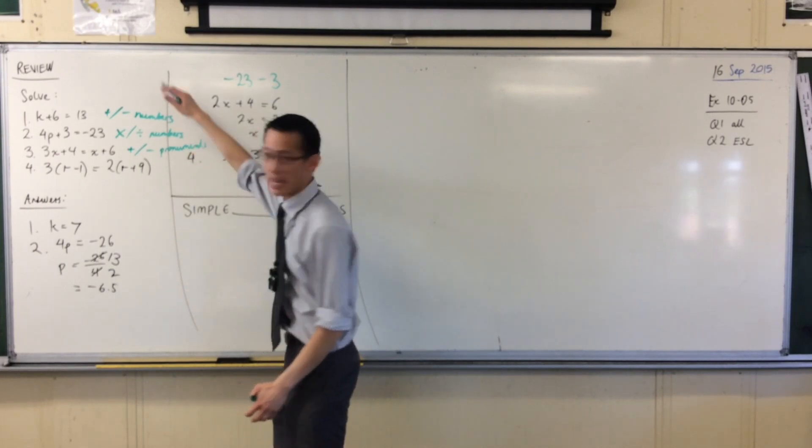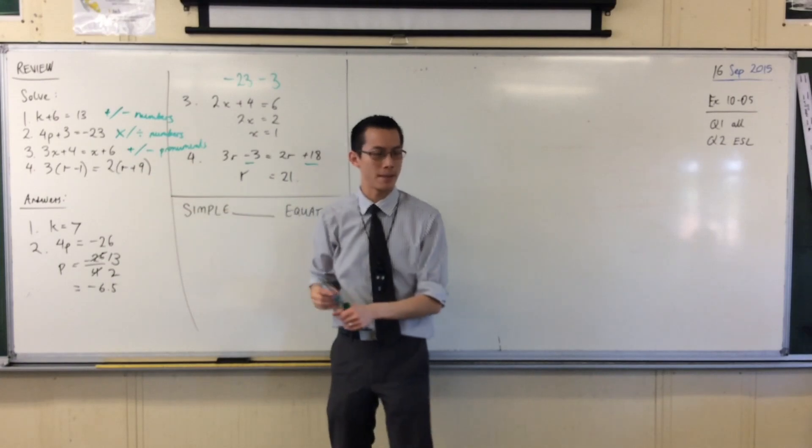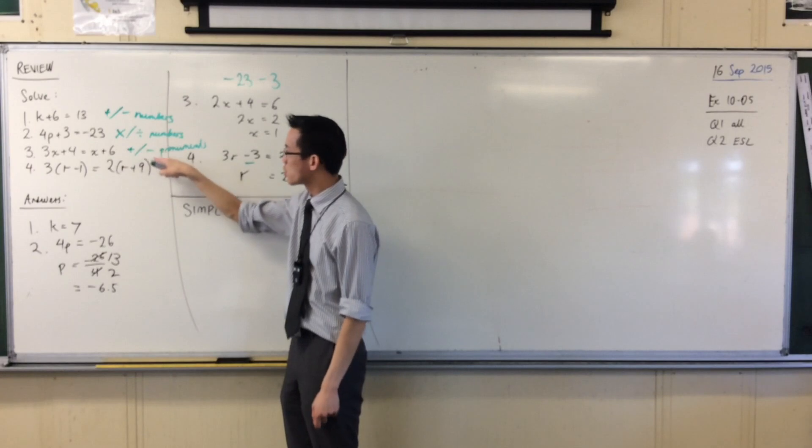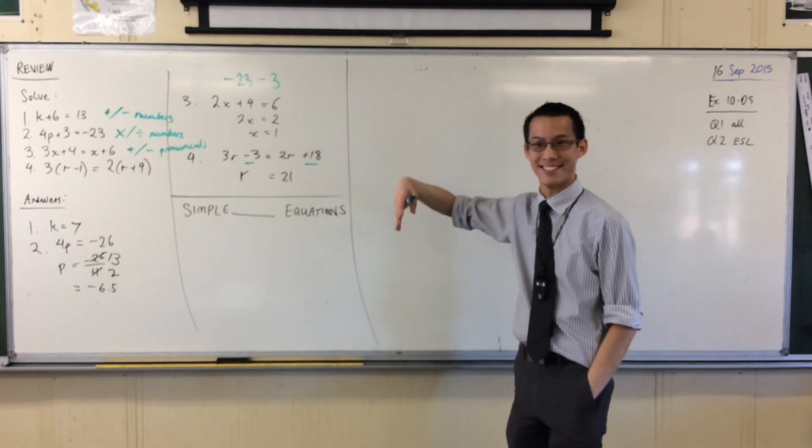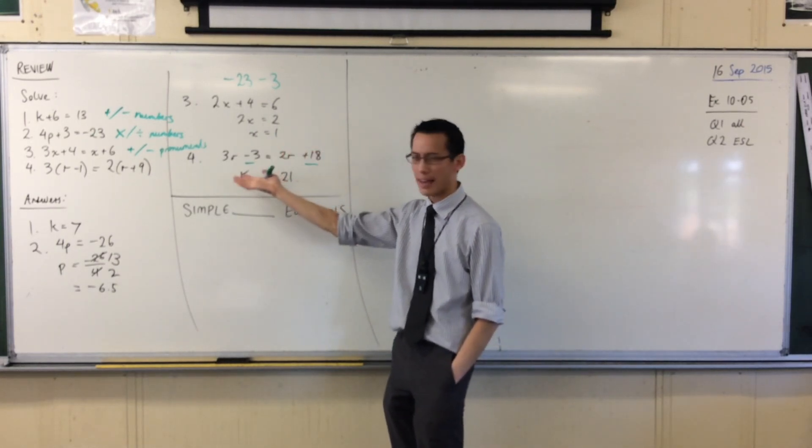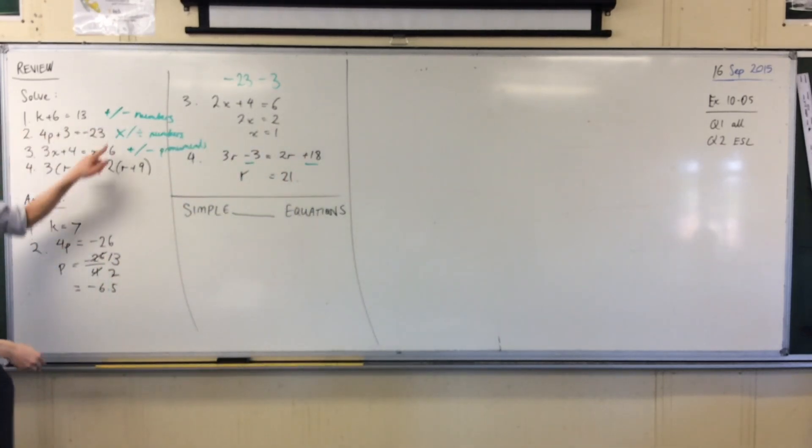All right, now I just want you to carefully look at what we've just established. I know I've got brackets there, but I'm not going to worry about them for now. You can add, subtract numbers. You can multiply, divide numbers. You can add, subtract pronumerals. If you were trying to complete the pattern, what's the next step? What's missing from this list? What looks like it should be the next thing? Yeah, Nathan? Multiplying and dividing, but not by numbers by pronumerals, okay?